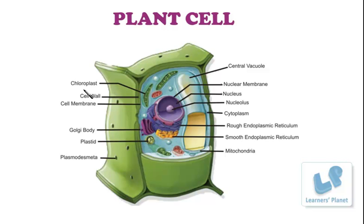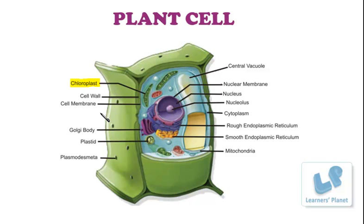The very first structure labeled here is the chloroplast. Even if the label is not there, if you see small oval green-shaped structures, you can label them as chloroplast. But if it is not green in color, you should label it as a plastid. You must differentiate between mitochondria and chloroplast because mitochondria also has an oval structure. The function of chloroplast is to perform the process of photosynthesis, as it contains the green pigment chlorophyll.